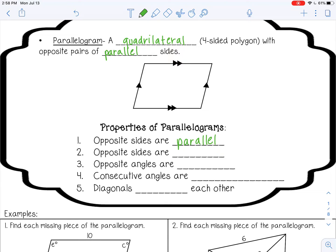The next one is opposite sides are congruent, which means they have equal lengths. For example, if this side had a length of 10, this side would also have a length of 10. If this side had a length of 14, this would also be 14.